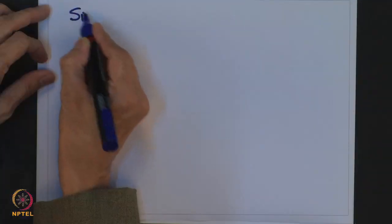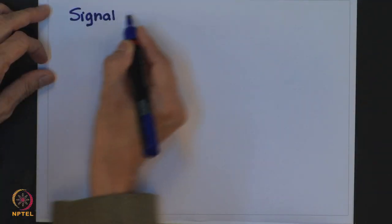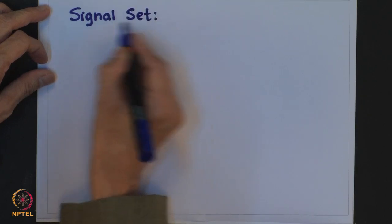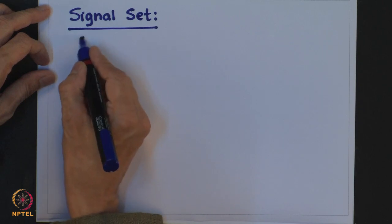In binary frequency shift key, we have two signals of frequency f1 and f2. The sinusoid with frequency f1 is used to transmit symbol 1, and the sinusoid with frequency f2 is used for transmitting symbol 0. The signal set used for binary FSK is as follows.